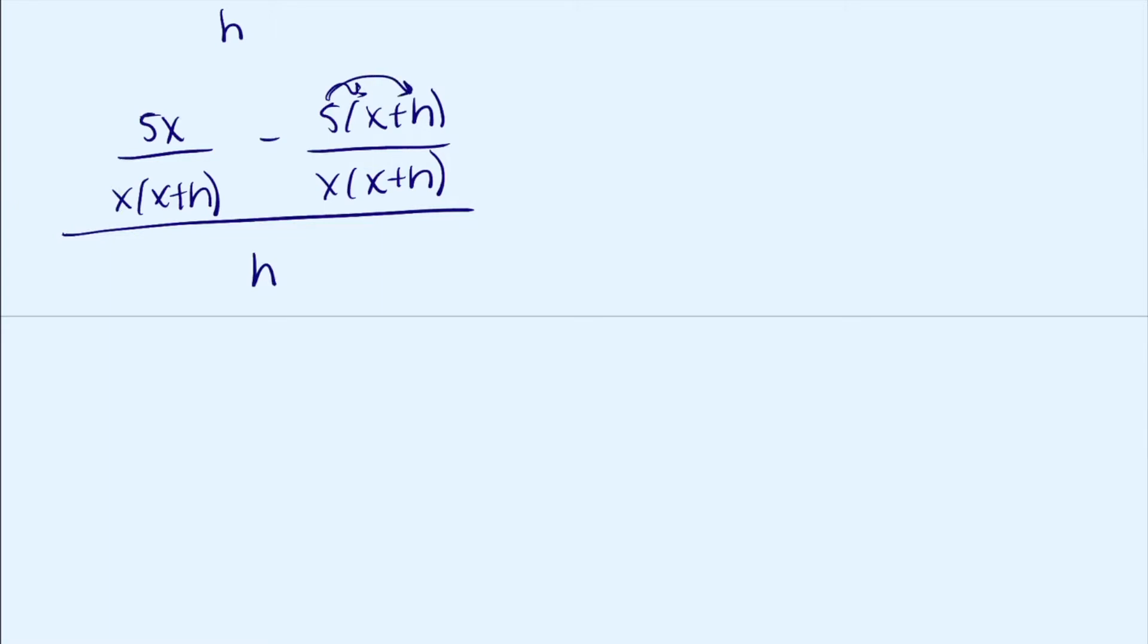5x minus 5x minus 5h, all over x times x plus h, all over h. These end up canceling.